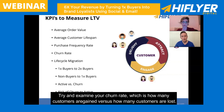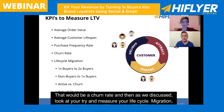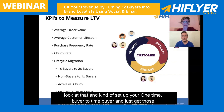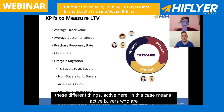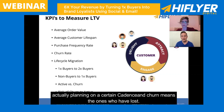Try and examine your churn rate, which is how many customers are gained versus how many customers are lost. And then as we discussed, try and measure your lifecycle migration. Look at that and set up your one-time buyer, two-time buyer, and get those set and ready so you can start measuring that. Active in this case means active buyers who are actually buying on a certain cadence, and churn means the ones who have been lost.